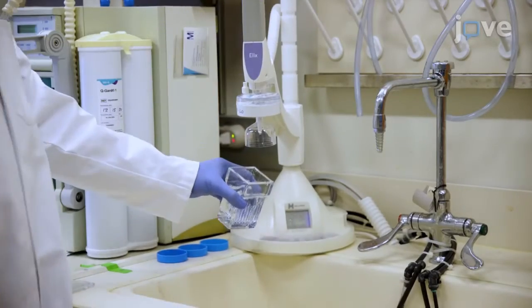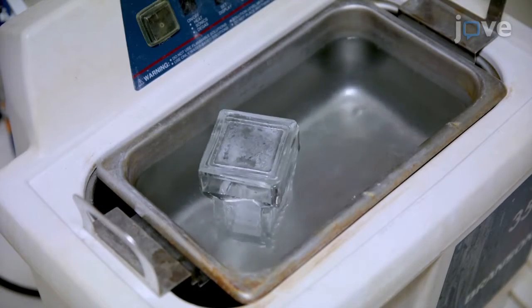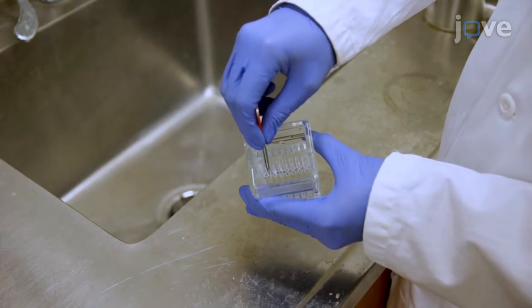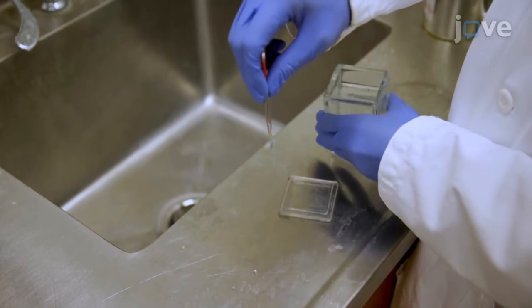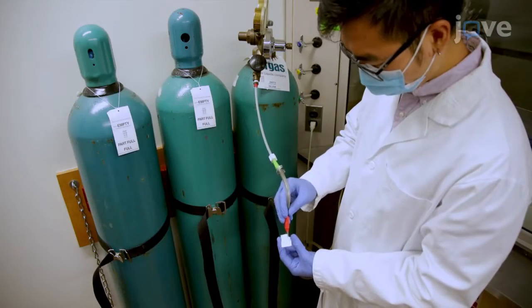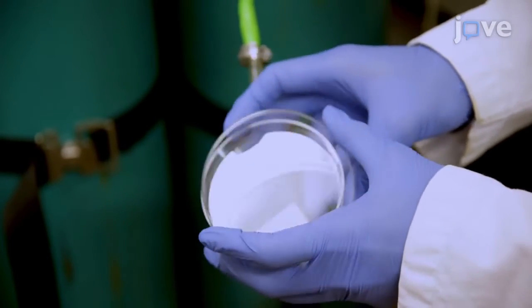Rinse the coverslips with distilled water six times, then sonicate them in ethanol for 10 minutes at 40 degrees Celsius. After washing the coverslips three times with distilled water, gently pick up each coverslip at the edge using forceps. Dry each coverslip with nitrogen gas and place each clean dry coverslip in its own petri dish.